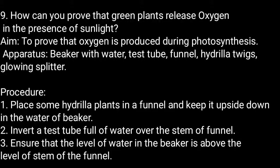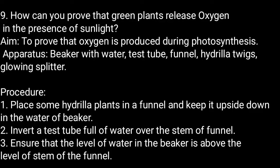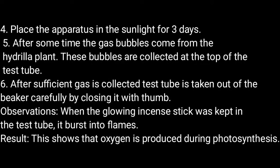How can you prove that green plants release oxygen in the presence of sunlight? Aim: To prove that oxygen is produced during photosynthesis. Apparatus: Beaker with water, test tube, funnel, Hydrilla plant, glowing splinter. Procedure: Place some Hydrilla plants in the funnel and keep it upside down in the water of the beaker. Invert a test tube full of water over the stem of the funnel. Ensure that the water level in the beaker is above the stem of the funnel. Place the apparatus in sunlight for 3 days.